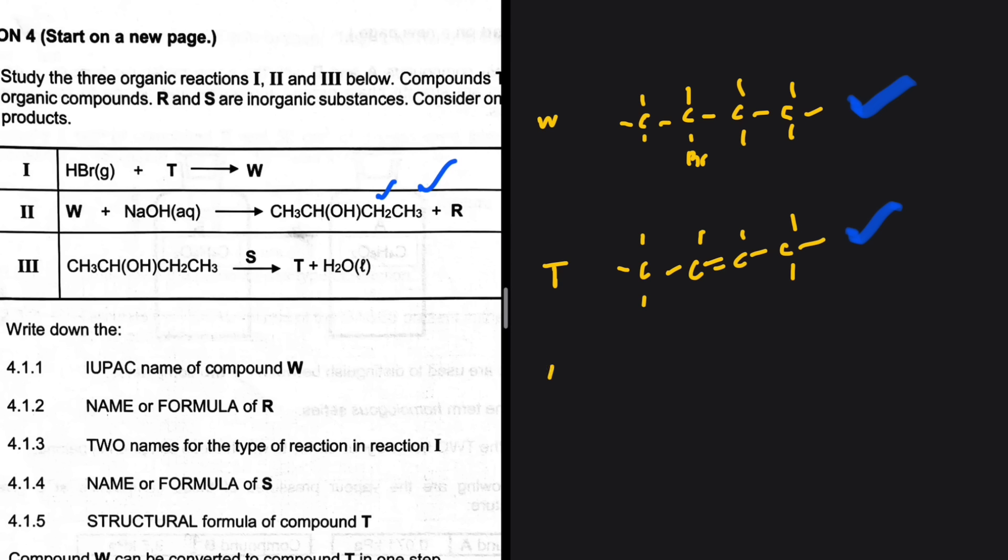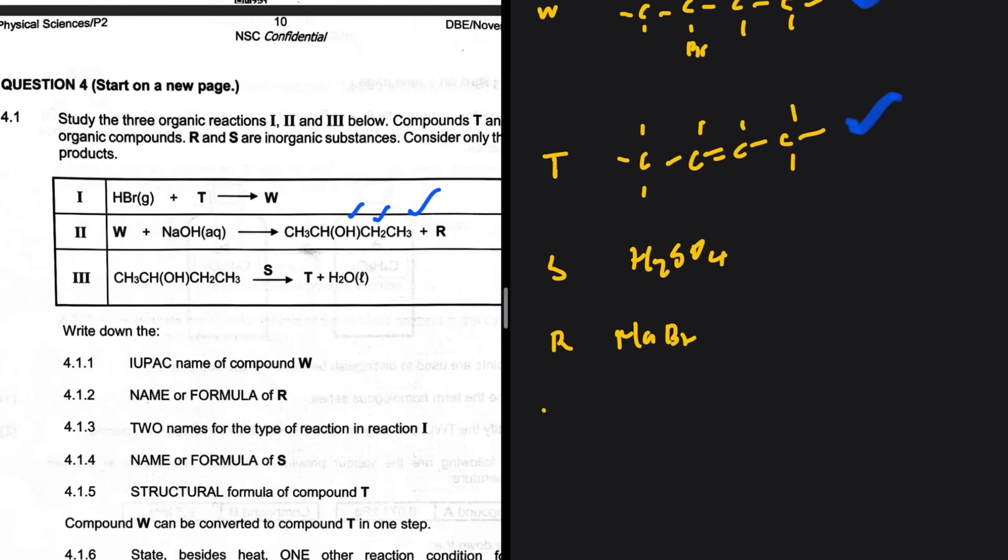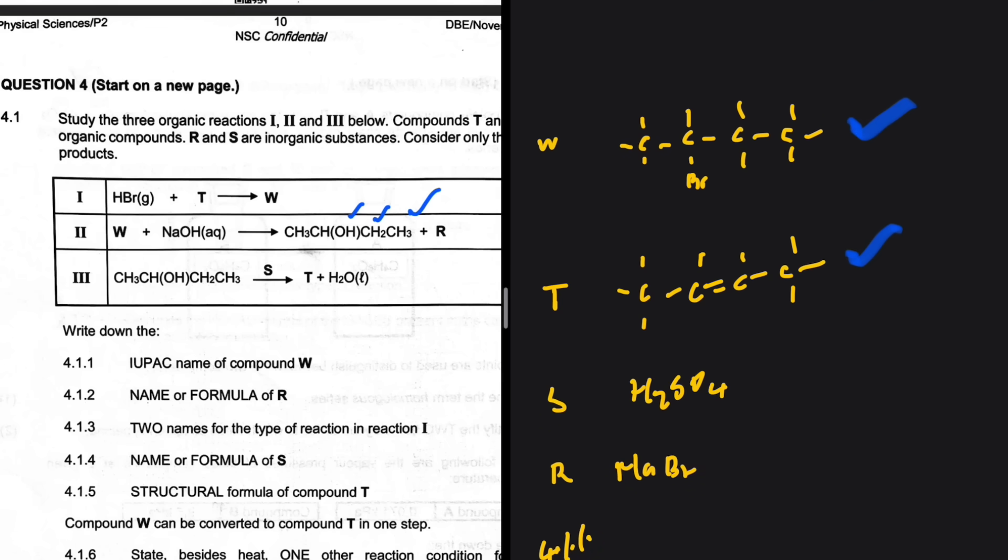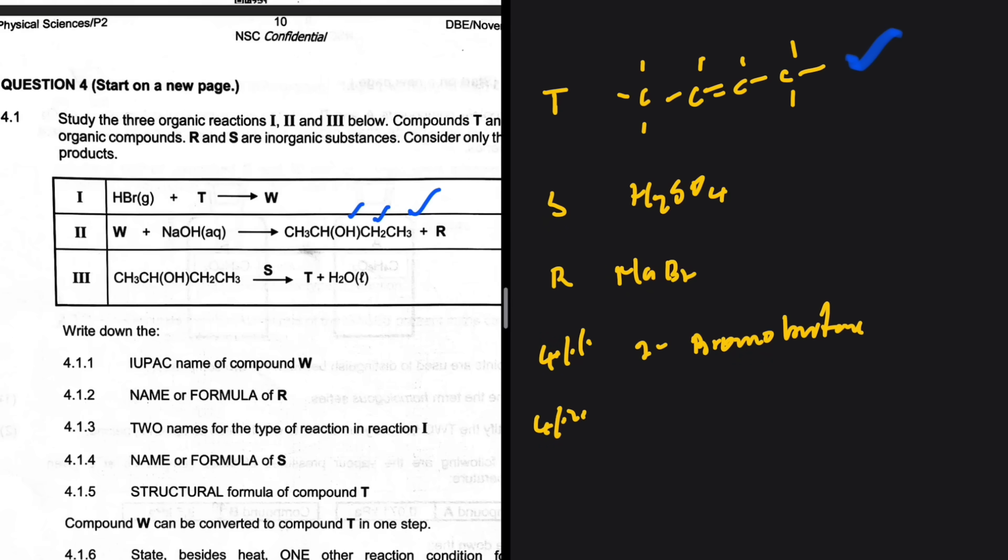What is S? S is H2SO4, it's what we use when we want to dehydrate. R in that situation would be NaBr because we added the OH from NaOH. For 4.1.1, the IUPAC name of W is 2-bromobutane. And 4.1.2, the name or formula of R is NaBr.